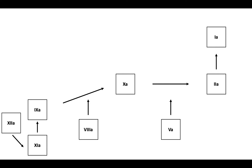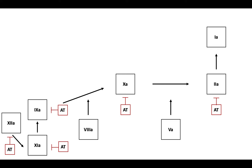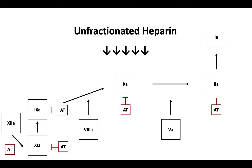When natural anticoagulant processes are activated, antithrombin inactivates both thrombin and factor 10a. Antithrombin also inactivates factors 9, 11, and 12. When unfractionated heparin is added to the system, it increases the antithrombotic effect of antithrombin, effectively blocking thrombin and factors 9, 10, 11, and 12, thus stopping thrombin generation and fibrin production.